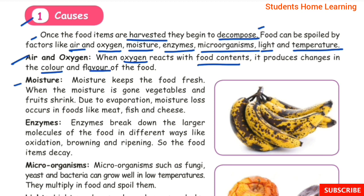Moisture: Moisture keeps the food fresh. When the moisture is gone, vegetables and fruits shrink. Due to evaporation, moisture loss occurs in food like meat, fish, and cheese.